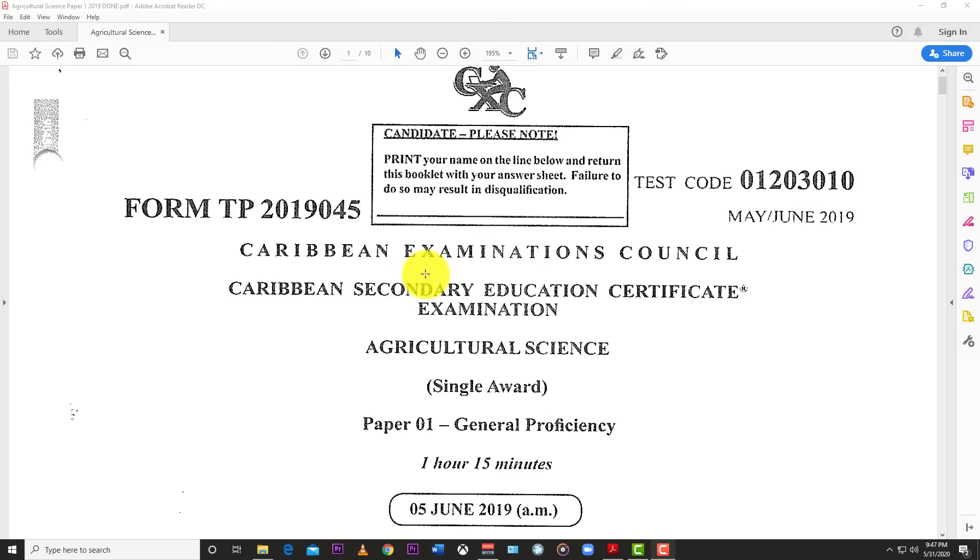Welcome back to Learn SKN. Today we have an Agricultural Science single award video for May June 2019, Paper 1. The paper looks a little faded, so you might have to squint to see what's being read, but let's just jump right into it.